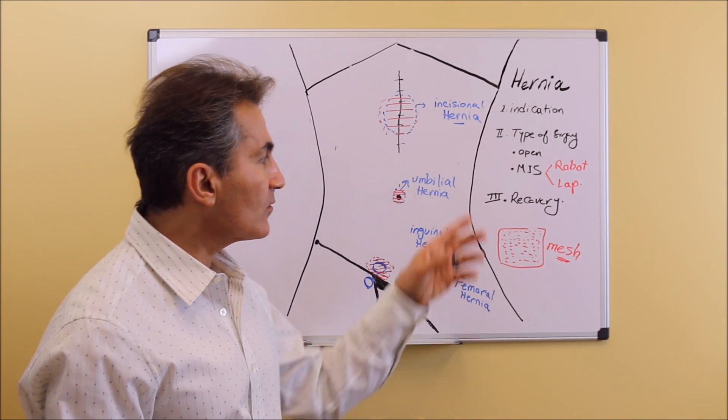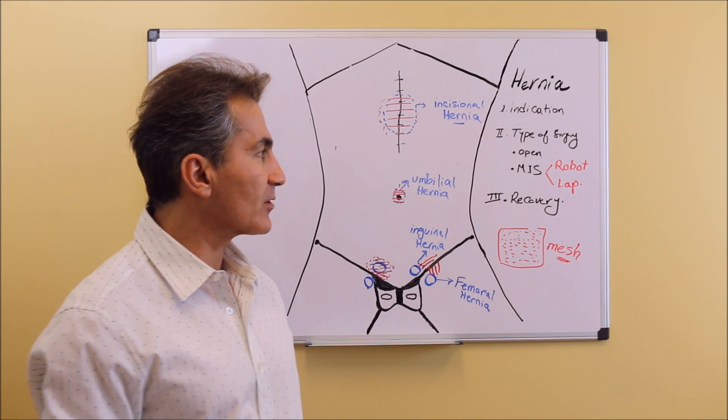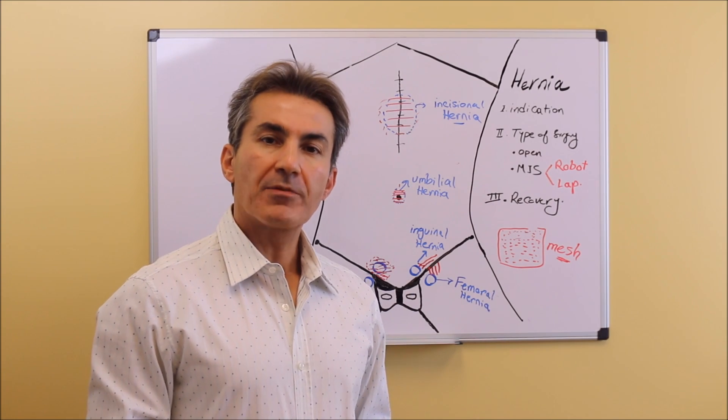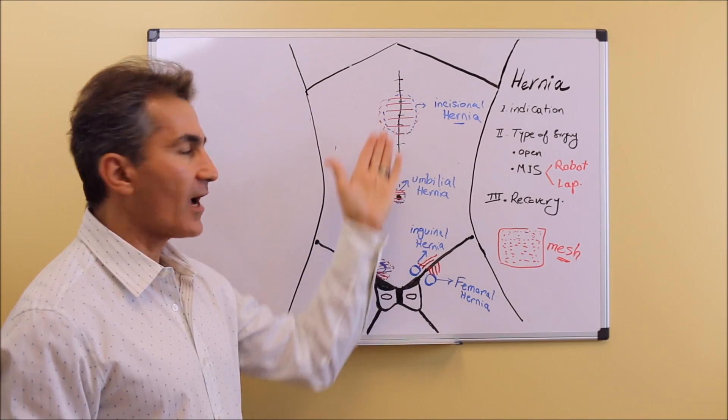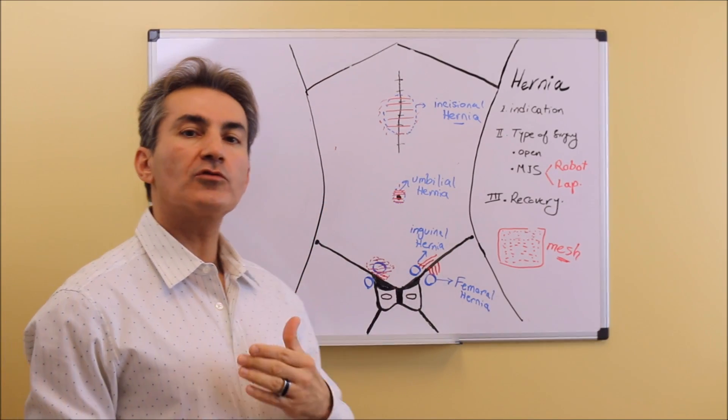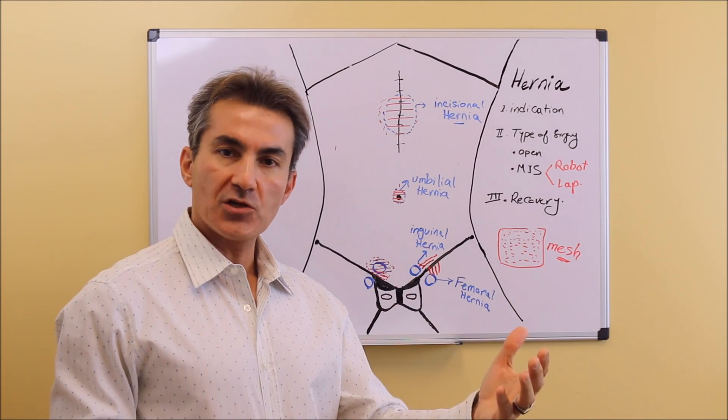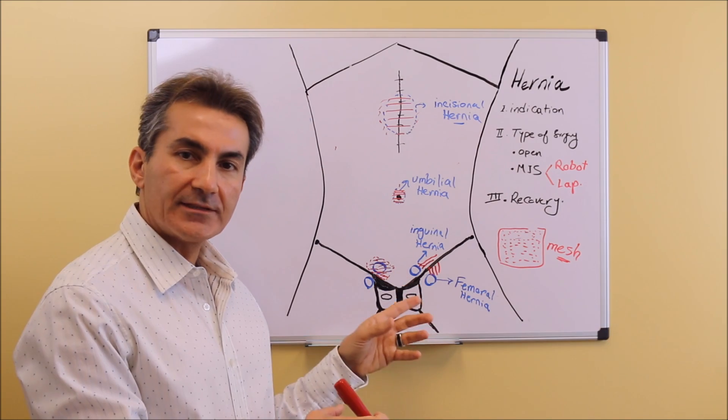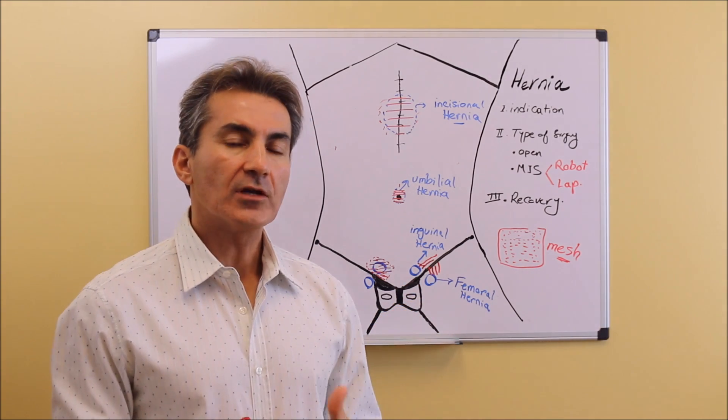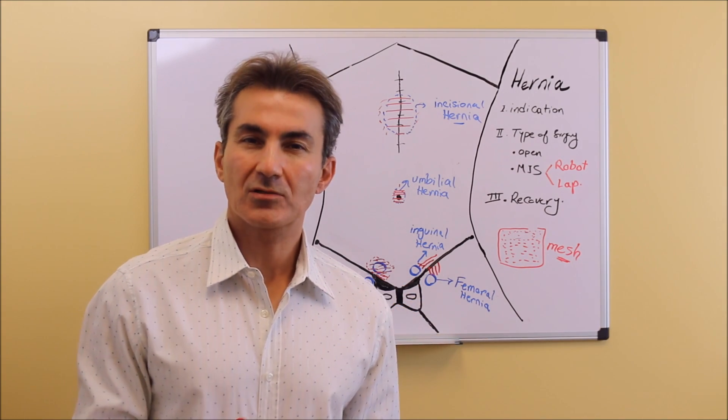What are the advantages of robotic or laparoscopic surgery compared to open? When you do open surgery, you have to create an incision, go through the normal tissue, and cut through the normal tissue in order to get to that hernia defect. By doing that you increase the trauma to the patient.